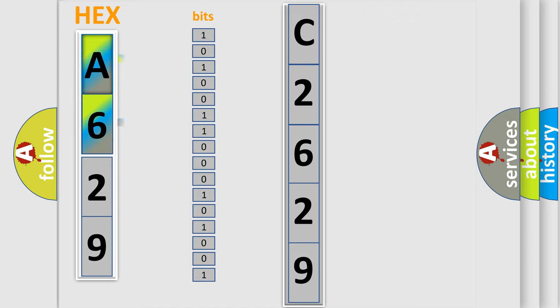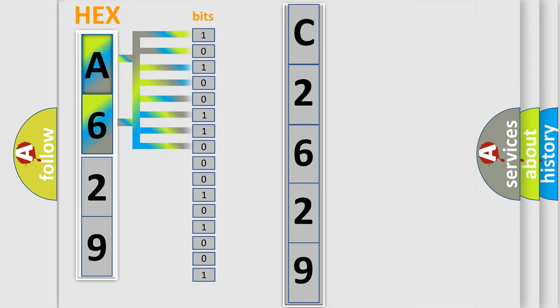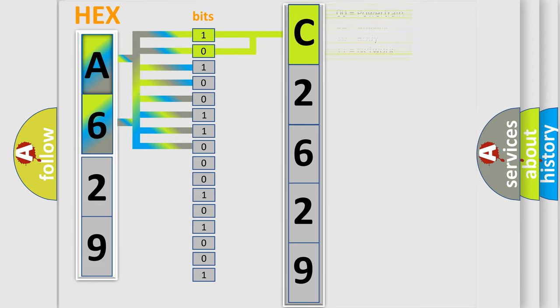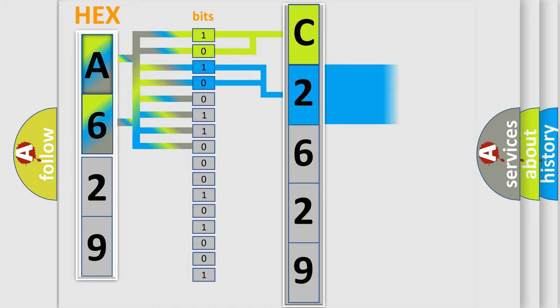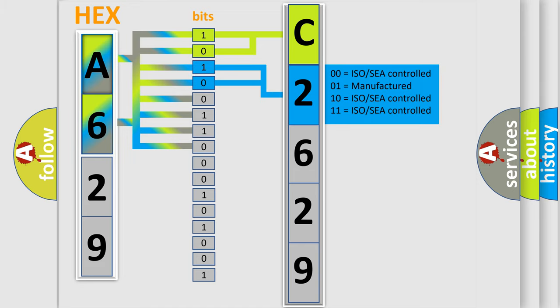The error code is split into two bytes consisting of 16 bits. One bit is the basic unit that each computer works with. The bit has two logical states: zero, which is low level, and one, which is high level. By combining the first two bits, the basic character of the error code is expressed.